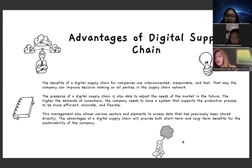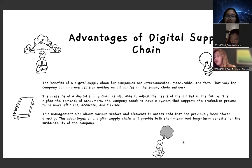Next, the advantages of digital supply chain. The benefits of a digital supply chain for companies are interconnected, measurable, and fast. The company can improve decision making for all parties in the supply chain network. The presence of a digital supply chain is also able to adjust to the needs of the market in the future. With high consumer demands, the company needs a system that supports the production process to be more efficient, accurate, and flexible. This management also allows various sectors to access data that has previously been stored directly. The advantage of a digital supply chain will provide both short-term and long-term benefits for the sustainability of the company.